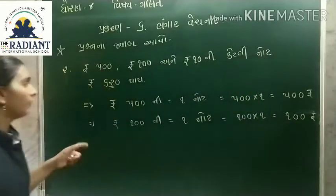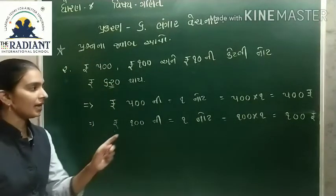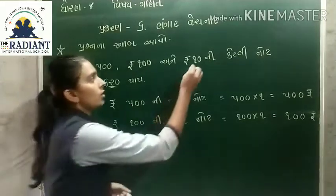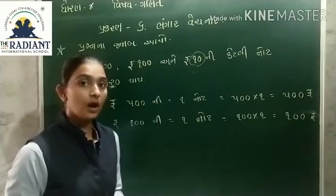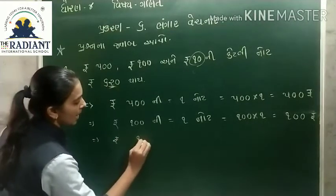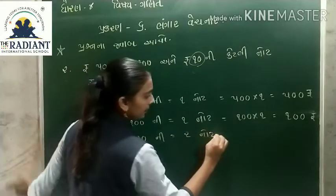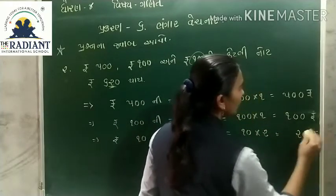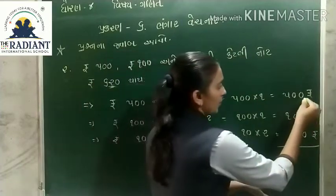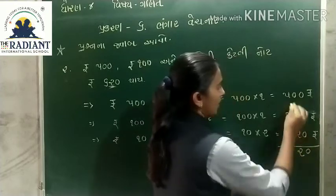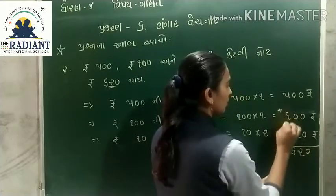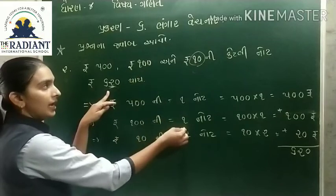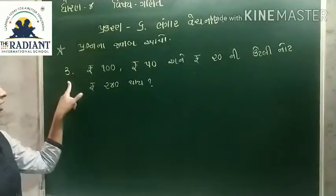100 રૂપ્યા ગણ્યા. હવે 20 રૂપ્યા બાકી. 500 + 100 = 600. 600 + 20 = 620. 10 રૂપ્યા ની 2 નોટ — 10 ગુણ્યા 2 = 20 રૂપ્યા. હવે ગણી લઈએ: 1 + 2 + 5 = 100, 620 રૂપ્યા. 500 ની 1 નોટ, 100 ની 1 નોટ, અને 10 ની 2 નોટ — ત્રણ પ્રકારની નોટ.